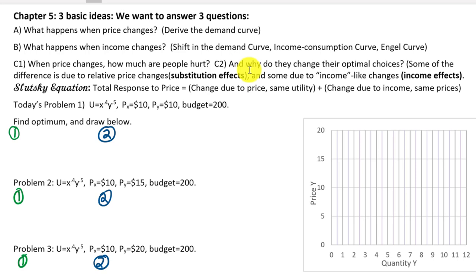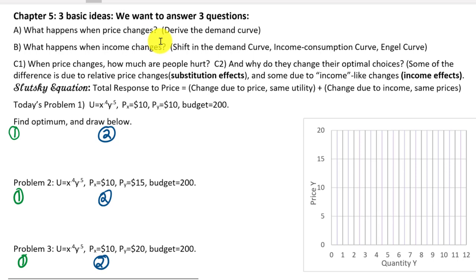In chapter 5, we use utility maximization to answer three kinds of questions. First, what happens when price changes — deriving a demand curve by checking how much someone wants to buy as price goes up and down. Second, what happens when income changes — for a normal good we expect more purchases when income rises, but we could have an inferior good. Third, we look at the Slutsky equation.